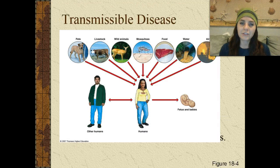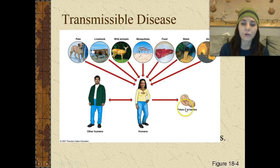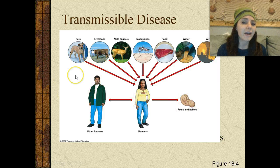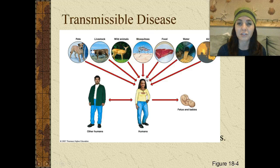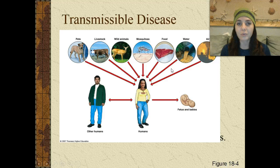There are different ways that diseases are transmitted. We can transmit them from person to person, from mother to infant. We can get them from pets, livestock, wild animals, different types of insects such as mosquitoes, fleas, and ticks, the food we eat if it's been contaminated, as well as water and air if those are polluted with different types of chemicals.